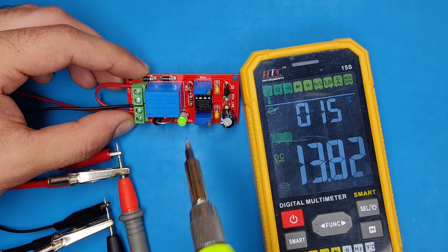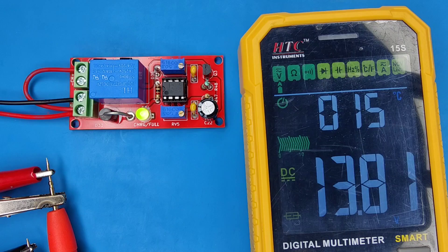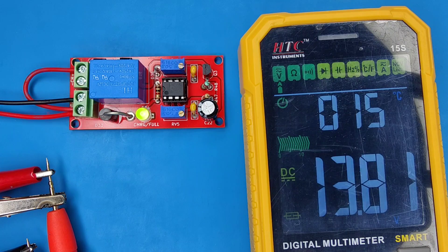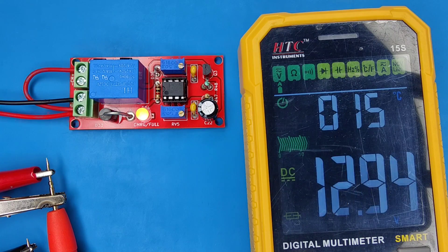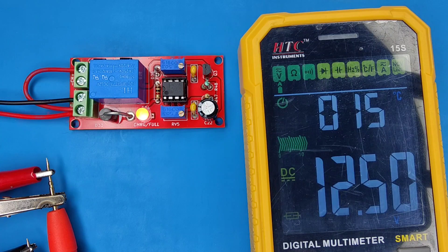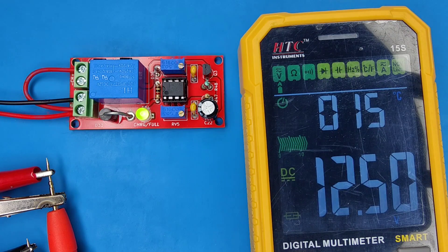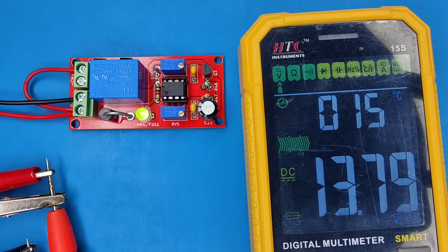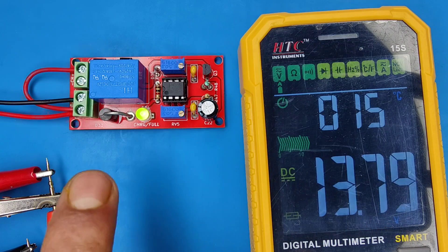Now our circuit is calibrated. As you can see, cutoff green LED is on at 13.8 volts. And if we decrease the voltage to 12.5 volts, red LED charging will turn on automatically. And cutoff green LED turns on increasing voltage back to 13.8 volts.